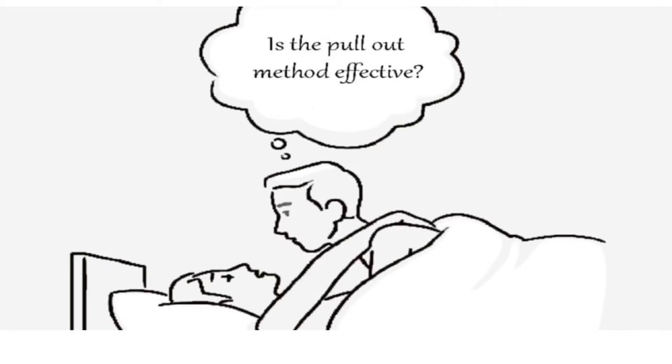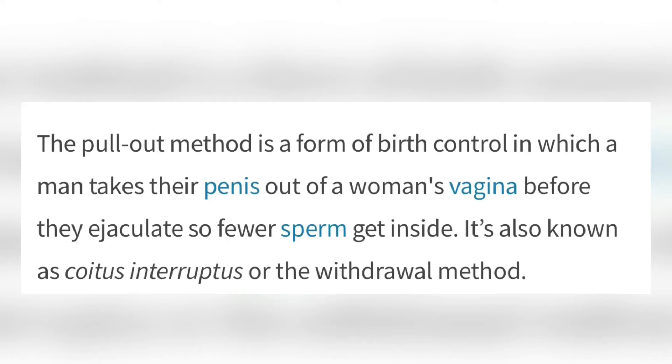Hello guys, welcome back to the D&N Medical Series. In today's video, we'll be looking at the pull-out method and if it's effective. So what exactly is the pull-out method? The pull-out method is a form of birth control in which a man takes their eggplant emoji out of a woman's peach emoji before climax has occurred.